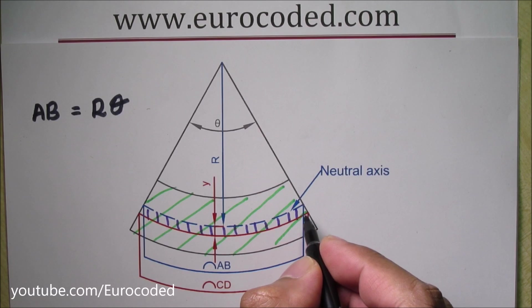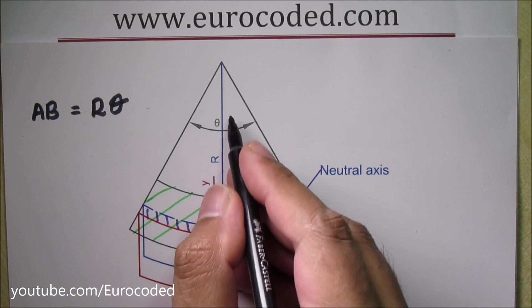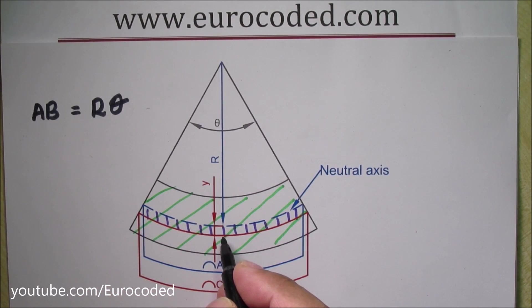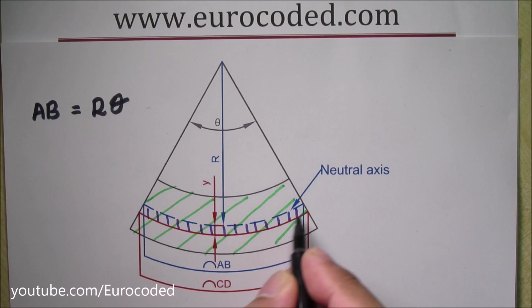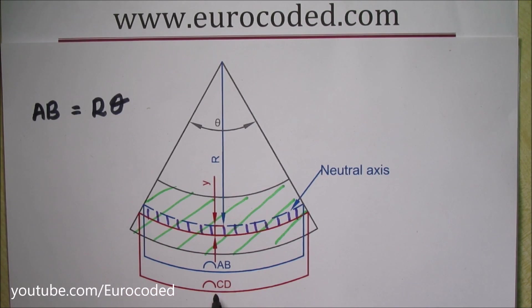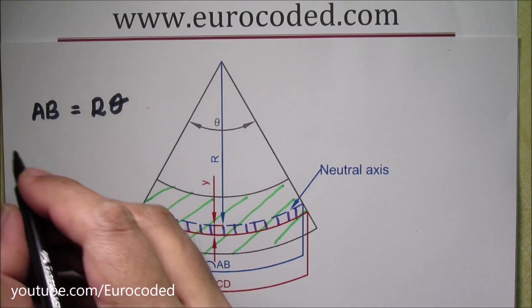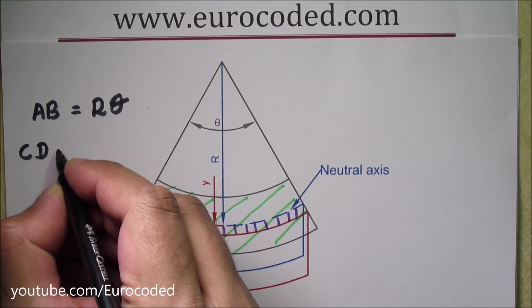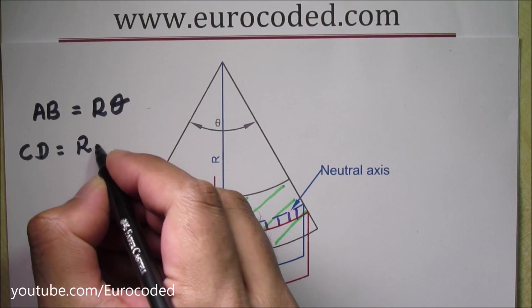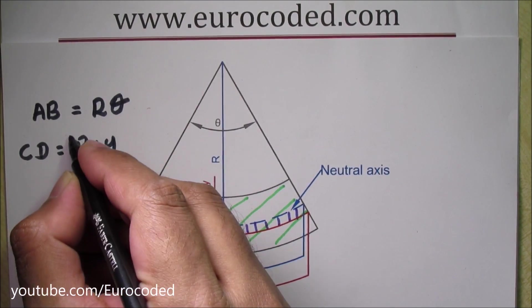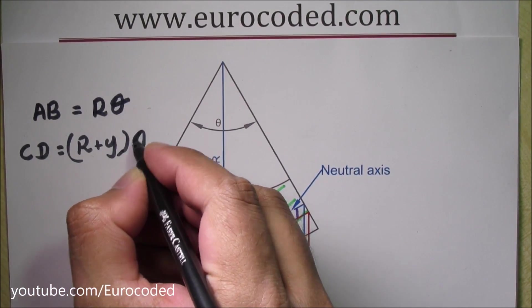And the radius of this red curve is R plus Y, and the length of this red line is noted as CD. And we can write CD is equal to R plus Y times theta.